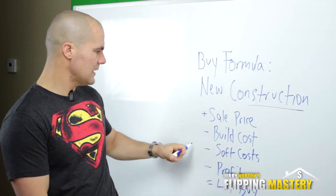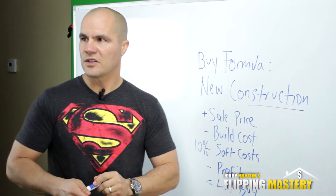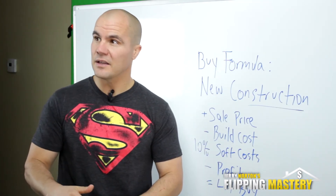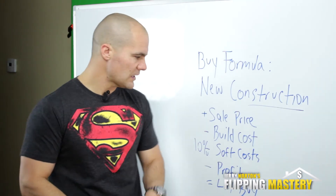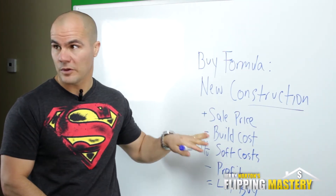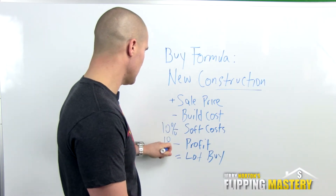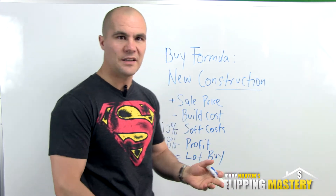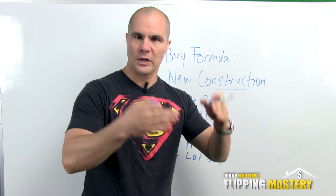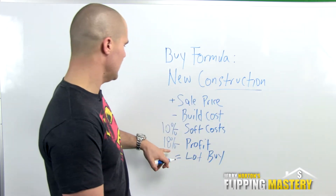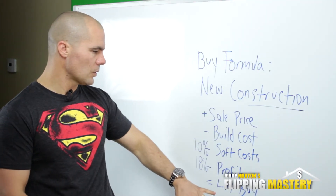Next we have what we call soft costs. I like to put that number at 10% of the sale price. This covers commissions to buy and sell, closing fees, and carrying costs. Then profit — that's 18%. I think 18 to 20% is a really good profit number to factor into your formula right off the top. Your profit should be 18% of the sale price.